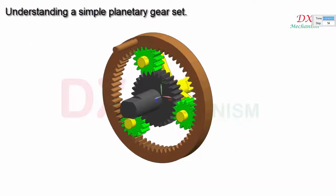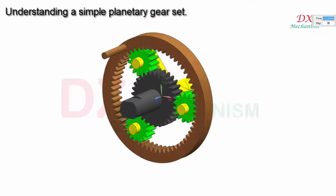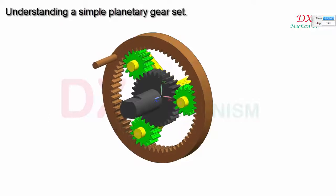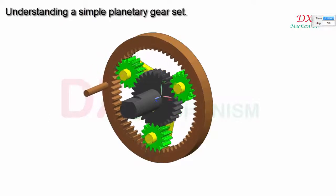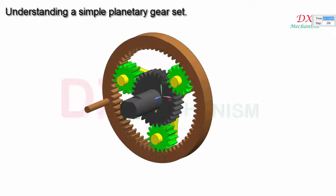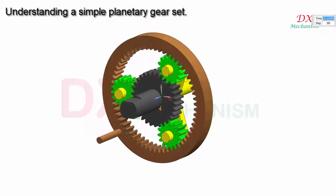By changing the input speed and locking or unlocking the carrier, there are three different outputs: low speed, high speed, and reverse.